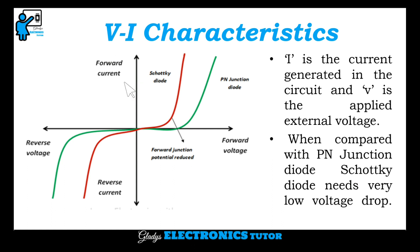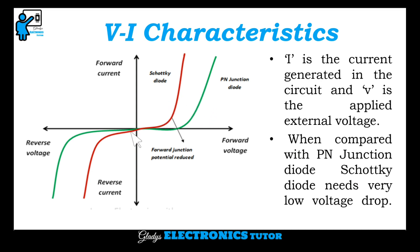This is the VI characteristics. Here, we can see the VI characteristics of the Schottky Diode and the P-N Junction Diode. This is the current and this is the voltage. When compared with the P-N Junction Diode, the Schottky Diode needs a very low voltage drop.